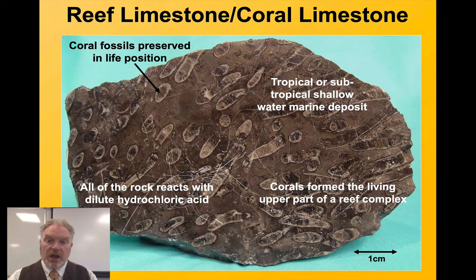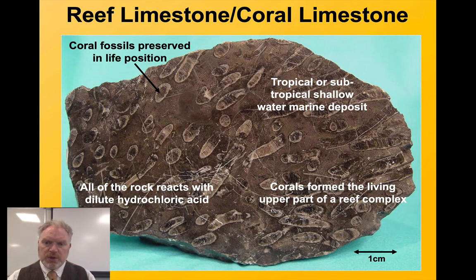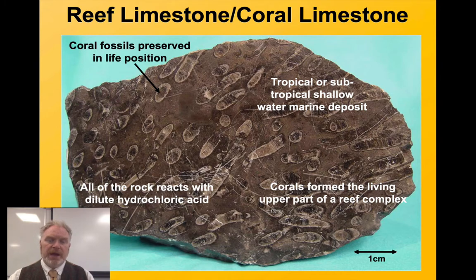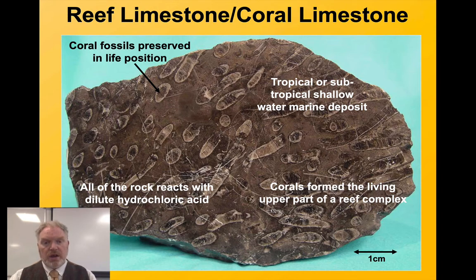Within larger coral reefs, it's a very distinctive rock, but sometimes we do need to look carefully at the rock, particularly at the fossils, to find the distinctive radial pattern of septa that tells us that the lighter-coloured parts of this rock are fossils and not clasts.